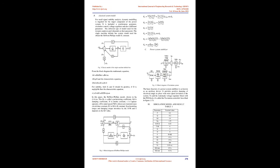June 2021. Classical System Model for Small Signal Stability Analysis: dynamic modeling is required for the major component of the power system. It includes a synchronous generator, excitation control, voltage regulator, and also different parameters. The different type of model used for the dynamic analysis depends on their parameters.